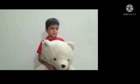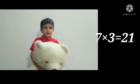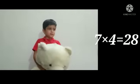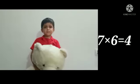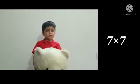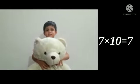7. 1 times 7 equals 7. 2 times 7 equals 14. 3 times 7 equals 21. 4 times 7 equals 28. 5 times 7 equals 35. 6 times 7 equals 42. 7 times 7 equals 49. 8 times 7 equals 56. 9 times 7 equals 63.